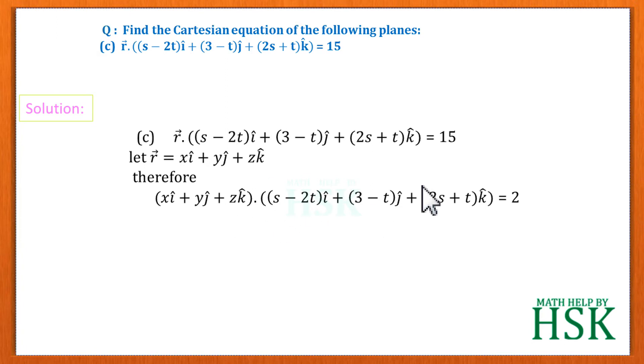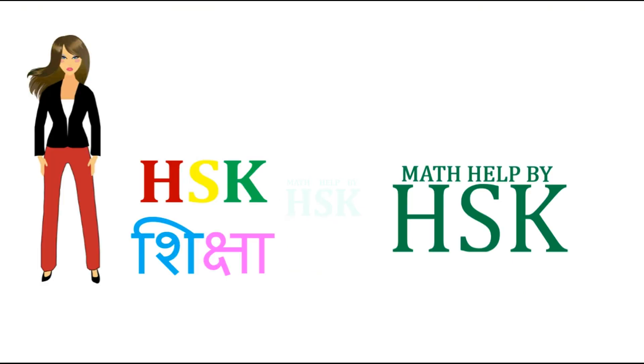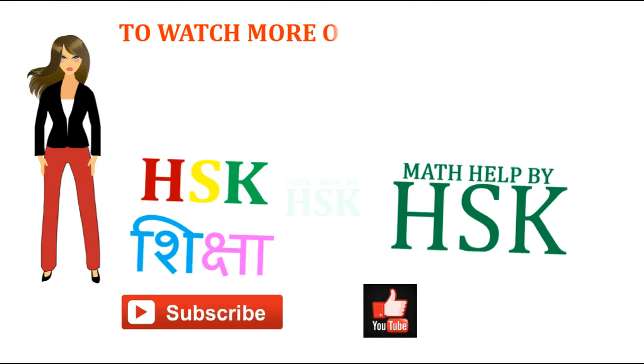Now on taking dot product of these two vectors I am going to get (s - 2t) into x, (3 - t) into y, (2s + t) into z = 15, like this, which is the required answer. So in this manner we are going to solve this question.